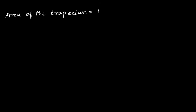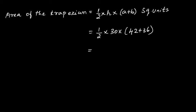Area of the trapezium equals 1 by 2 into H into A plus B square units. So 1 by 2 into H value 30 and A and B values are 42 plus 36. 1 by 2 into 30 into 78. When you cancel you get 15, and 15 multiplied by 78 equals 1170. The unit of measurement is meter, so 1170 meter square.